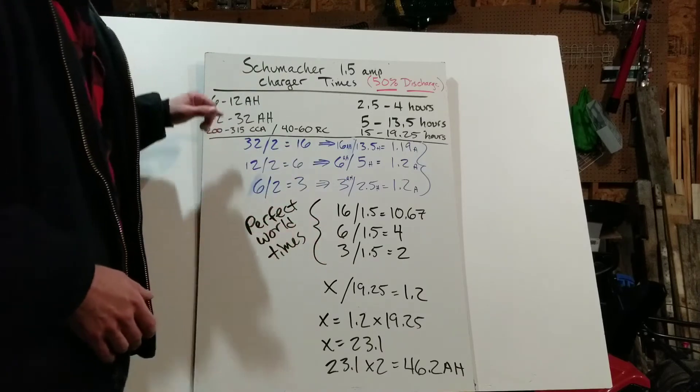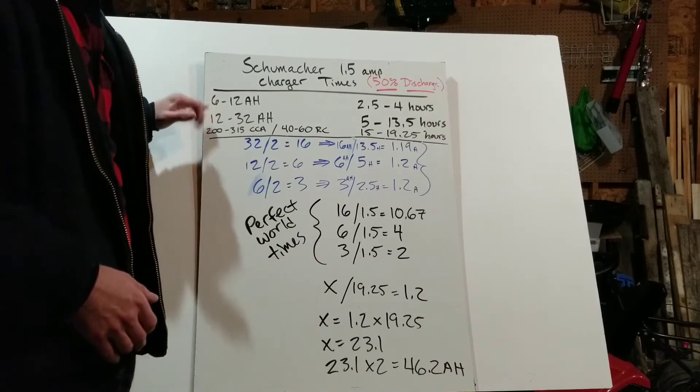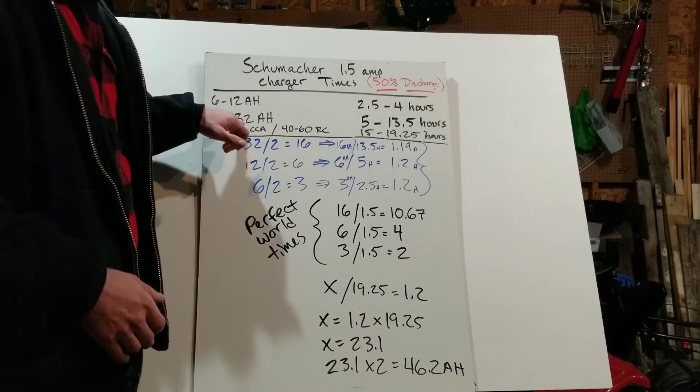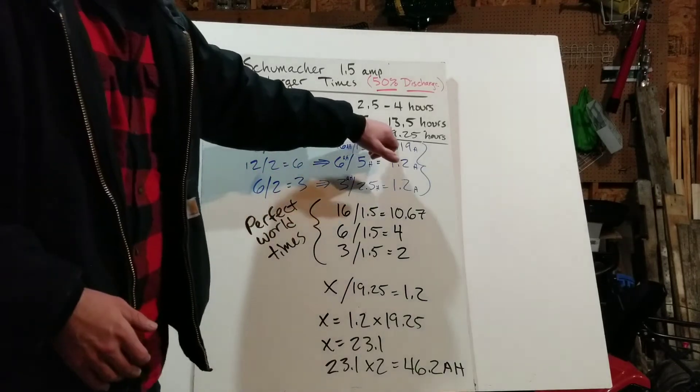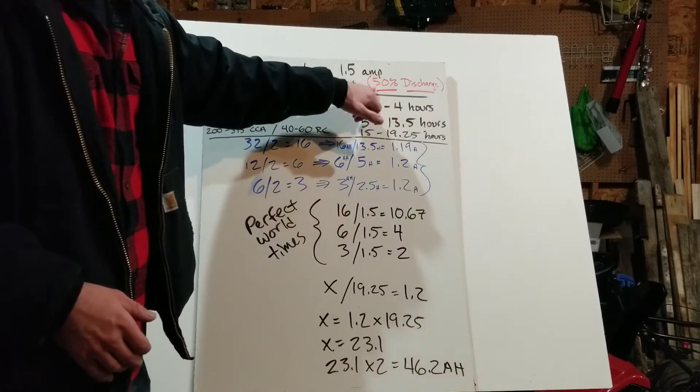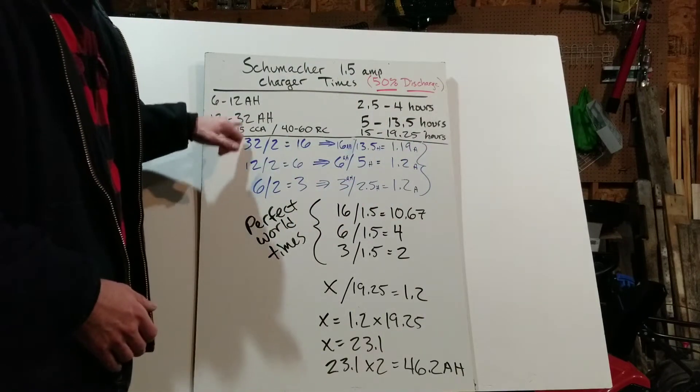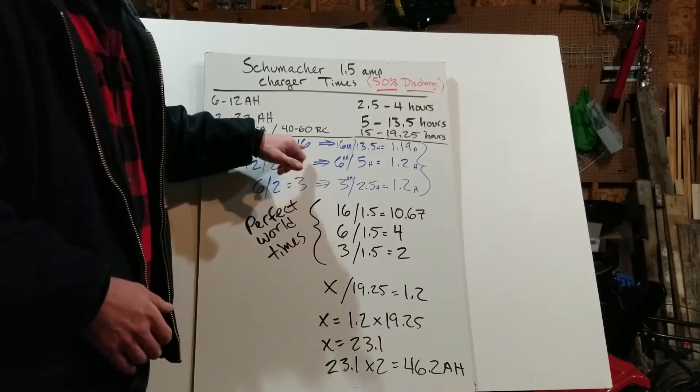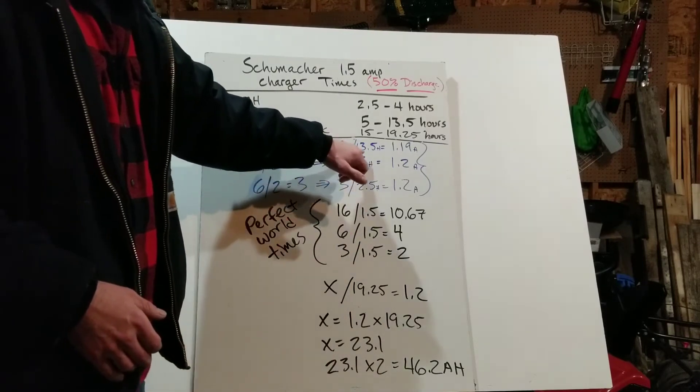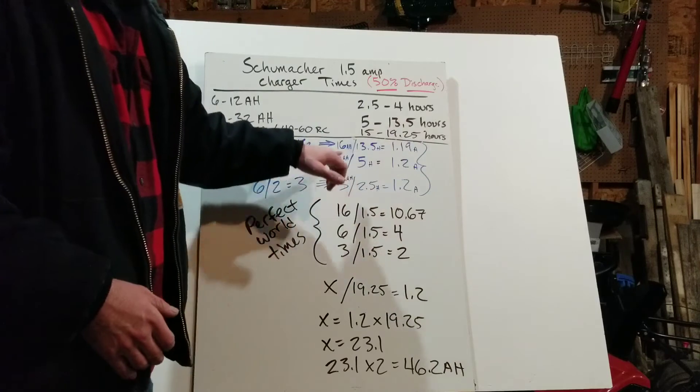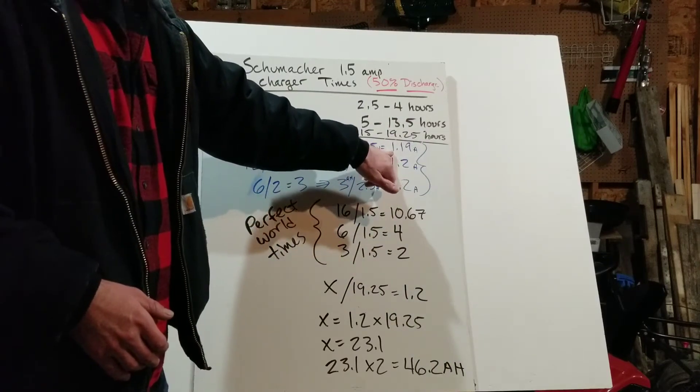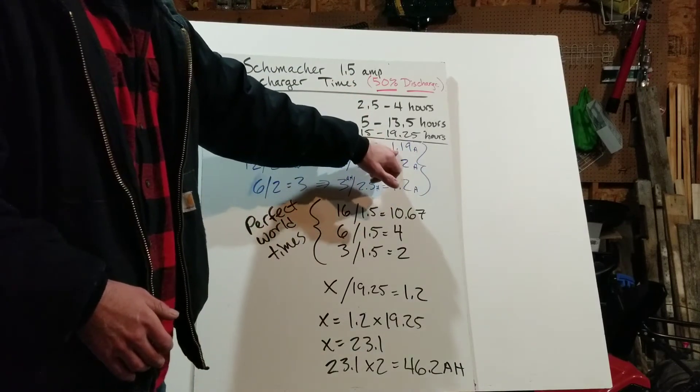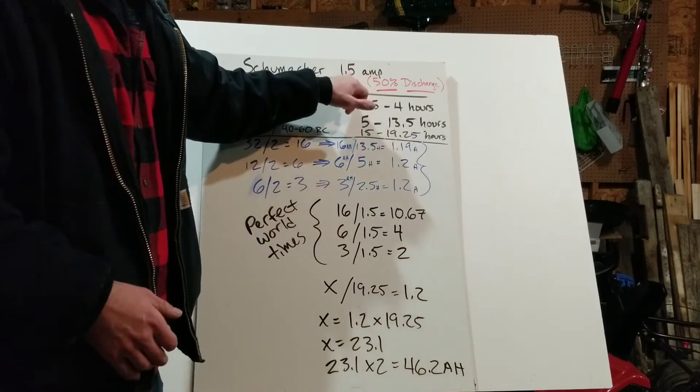So let's take a look at the first two sets of batteries that it gives us, even though they're not the car batteries yet, but it'll go into this. So for example, a 32 amp hour battery is going to take 13.5 hours to charge when it's 50% discharged. So that means if we take 32 divided by two to get 50%, we got 16 amp hours that need to be charged up. So that's 16 amp hours. If we divide it by the 13.5 hours, we're going to see that per hour, we're really getting 1.19 amps, and it's a 1.5 charger. So that's 79% of 1.5.